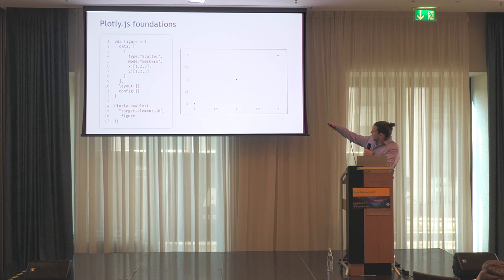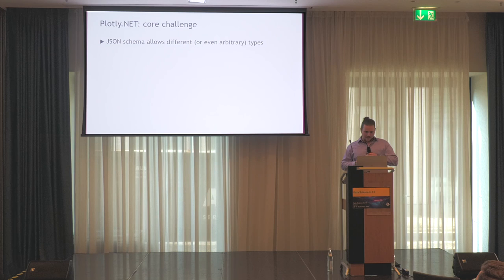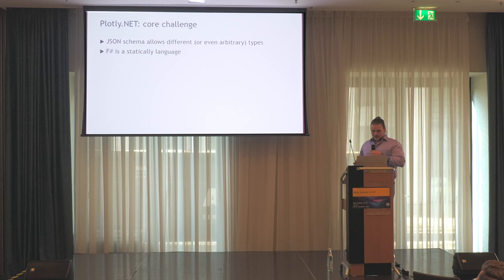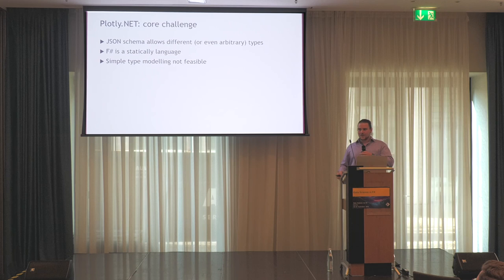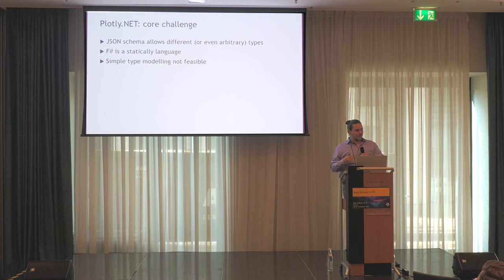If you then use this plotly.newPlot function in a JavaScript environment, you end up with a chart. There are some core challenges with wrapping a JSON schema in a statically typed language. The schema itself allows different and sometimes arbitrary types for its members — it is not just a string, you can also give it an object, an array, and so on. Additionally, all of these attributes are optional, so you have this potentially deeply nested object structure that can also be just a minimal object. It is quite hard to achieve this with the standard record type domain modeling approach in F#.